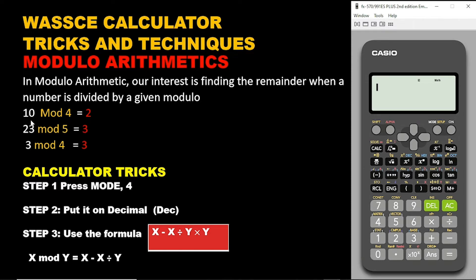So for example, given 10 mod 4 is equal to 2. This means when you divide 10 by 4, you will get 2. And then again 23 in mod 5, the answer is 3. That is when 5 divides 23, the remainder is going to be 3. And we can do this so easily. Let's go to the trick.